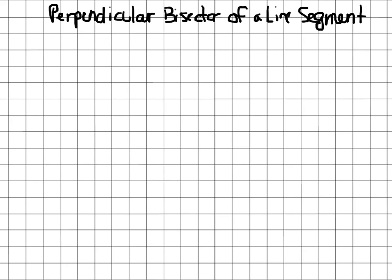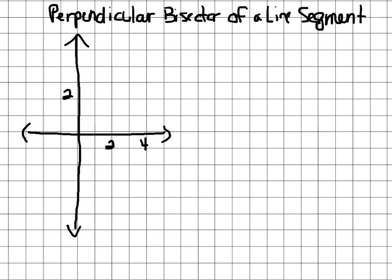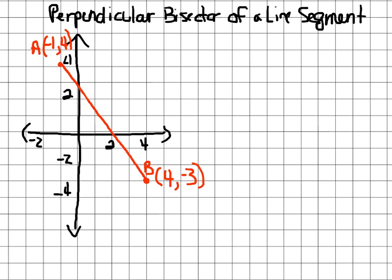This lesson is on perpendicular bisectors of a line segment. I'm going to draw a coordinate grid with a scale: 2, 4, negative 2, negative 4. I have a line segment that goes from point B at (4, -3) to point A at (-1, 4).